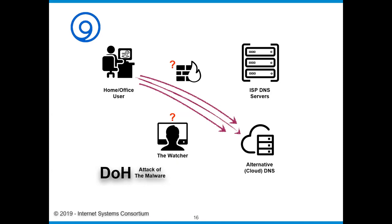One thing completely lost with DOH is the ability of the firewall to implement any policies. The 'no gambling during work hours' policy has gone out the window because the gambling app is now doing DNS over HTTPS to figure out where its servers are. All the things blocked by DNS firewalls and DNS-based policies become very difficult to enforce with DOH.